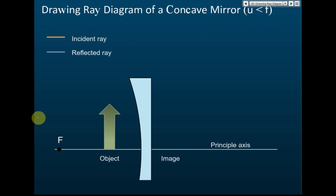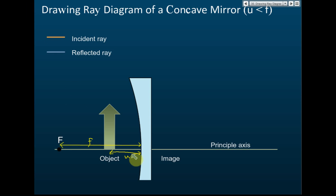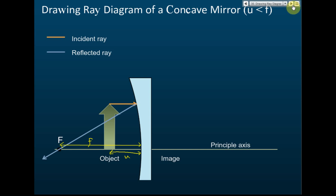Here, u is the distance of the object from the mirror, and f is the focal length. So in this case, the distance of the object is less than the principal focus. To draw the ray diagram, the first rule is: a light ray parallel to the principal axis will be reflected and pass through the principal focus.